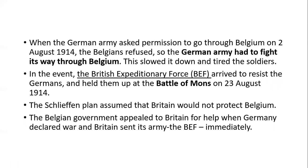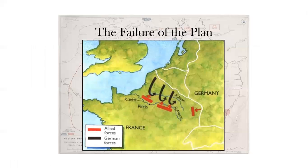The Belgian government appealed to Britain for help when Germany declared war, and Britain sent its army, the BEF, immediately. What are some of the reasons for the failure of the plan? First, the plan relied upon rapid movement, and the resistance of the Belgian forces and the BEF hindered this.